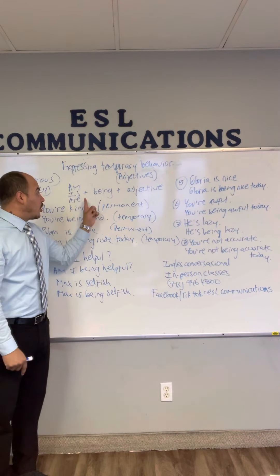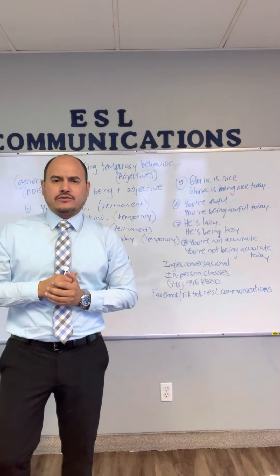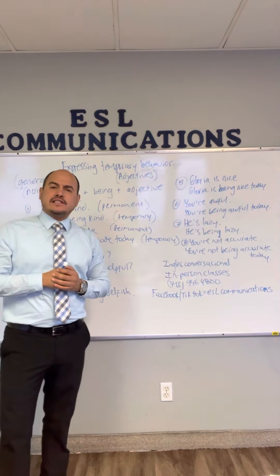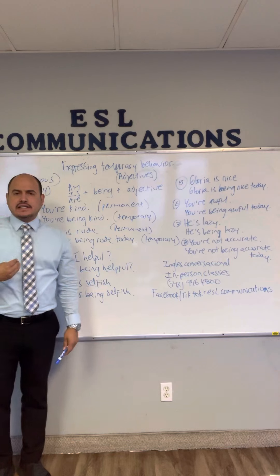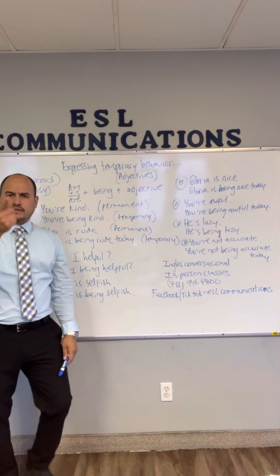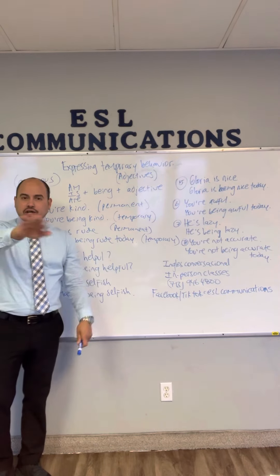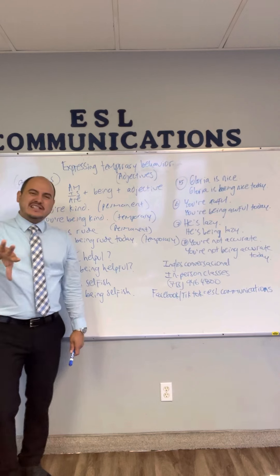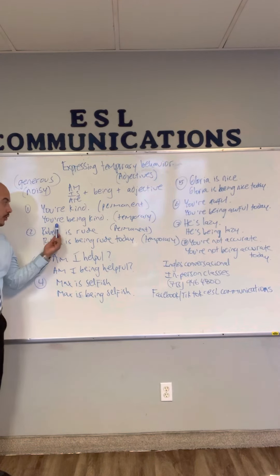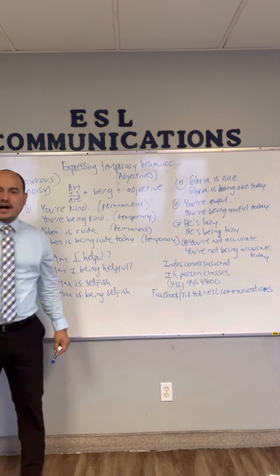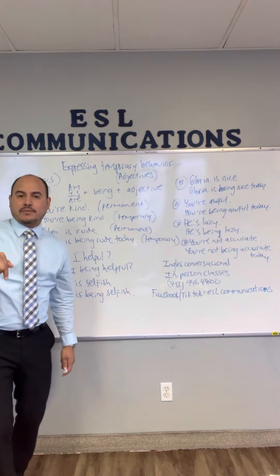The rule is: am, is, are, being, and then the adjective — el comportamiento que la persona esté teniendo. Let's go over the examples. Number one: 'kind.' Kind es el adjetivo amable. Permanent: 'You're kind.' But if the person is only acting that way today: 'You're being kind.' Or: 'Thank you for being kind' — gracias por ser amable, hablando del comportamiento temporal.